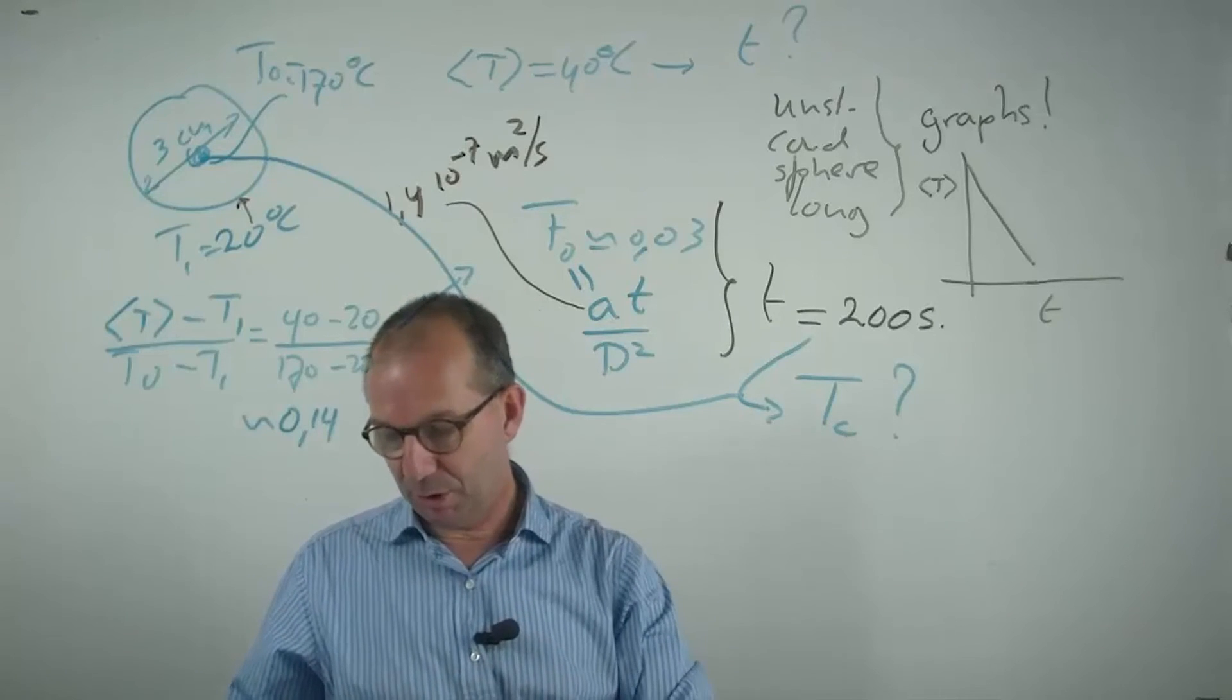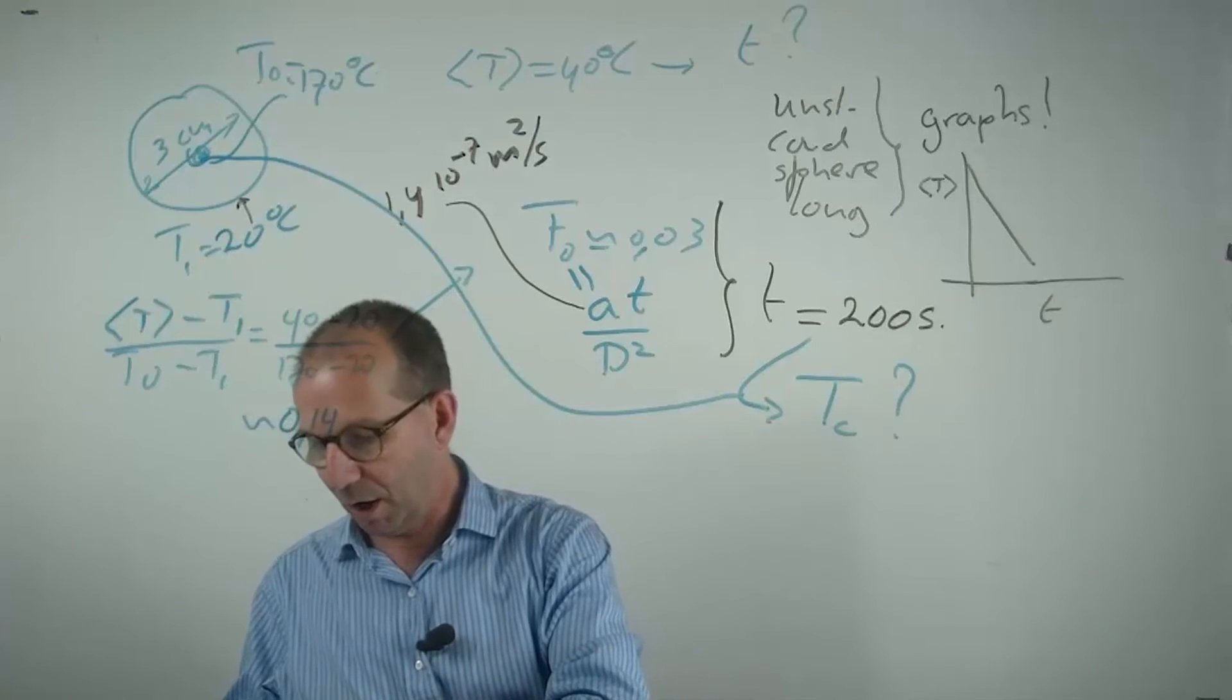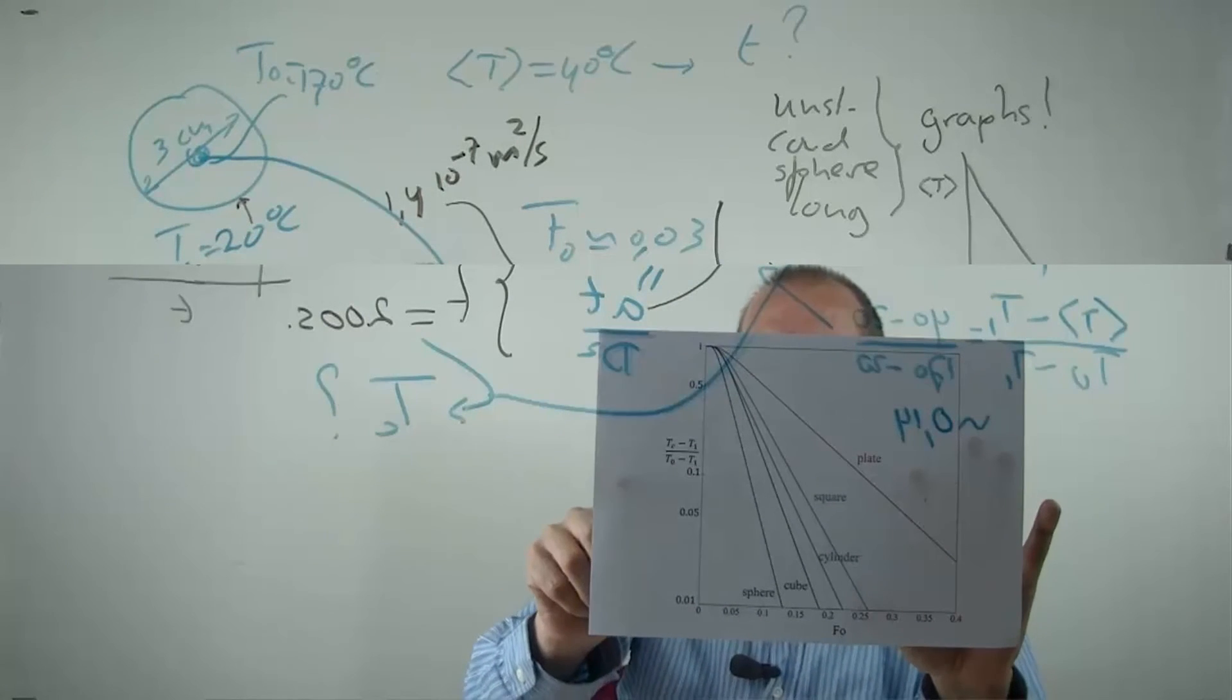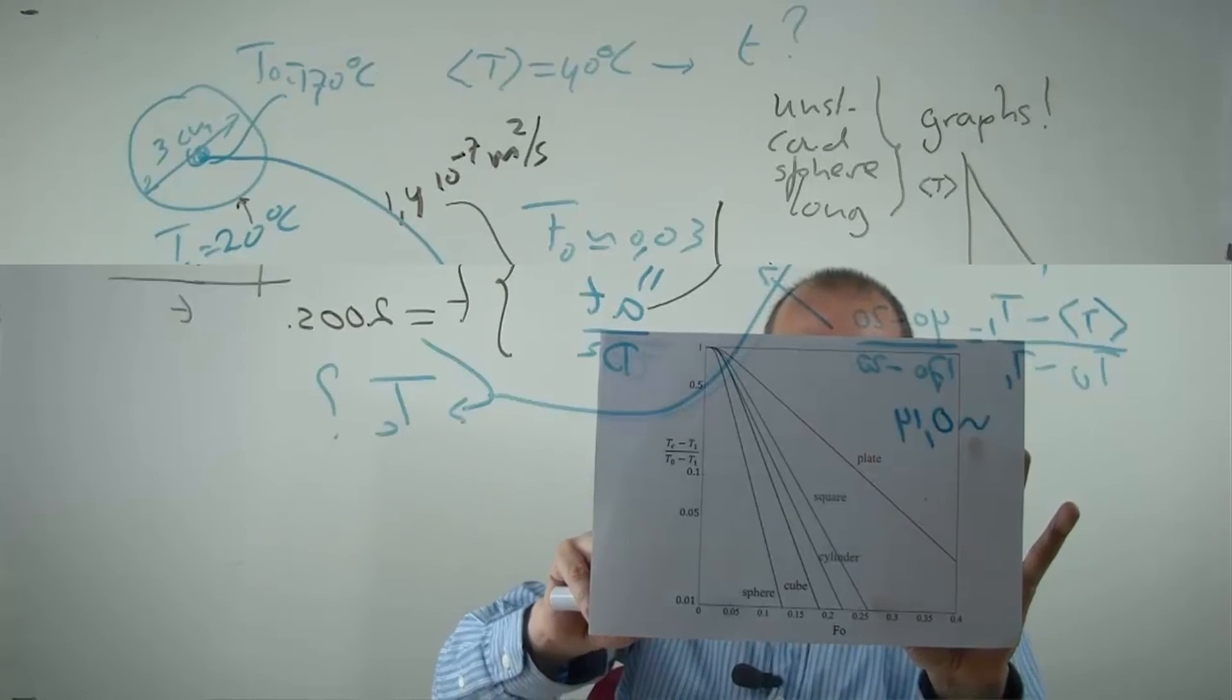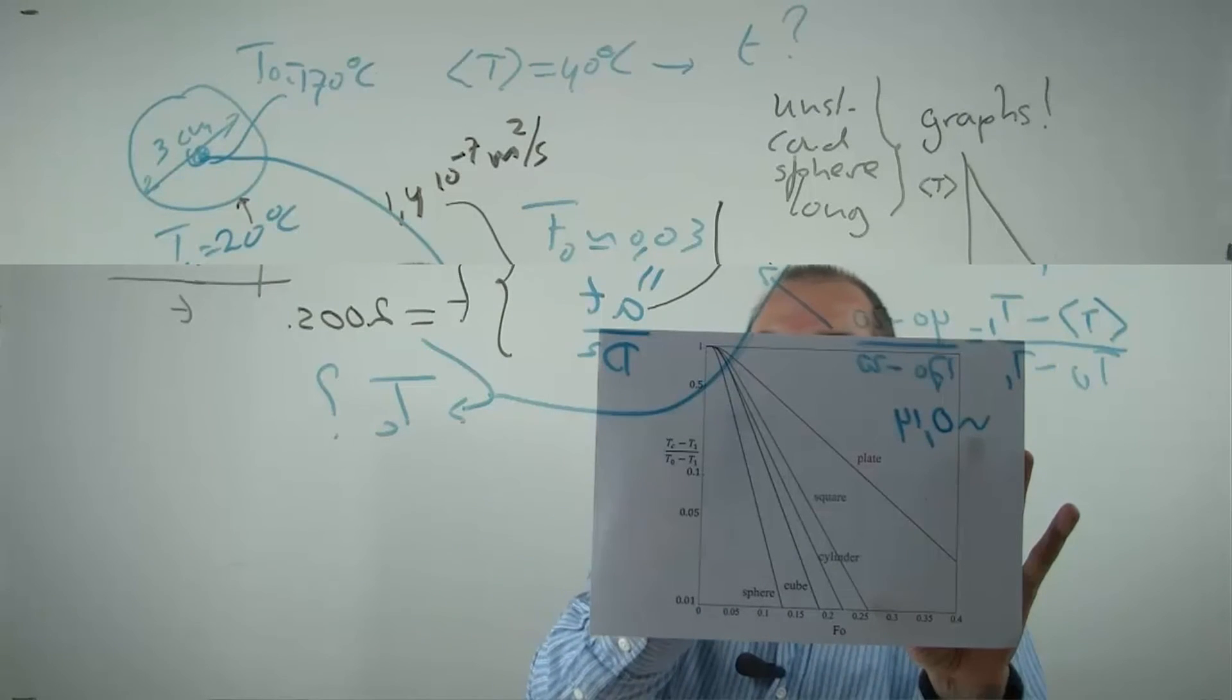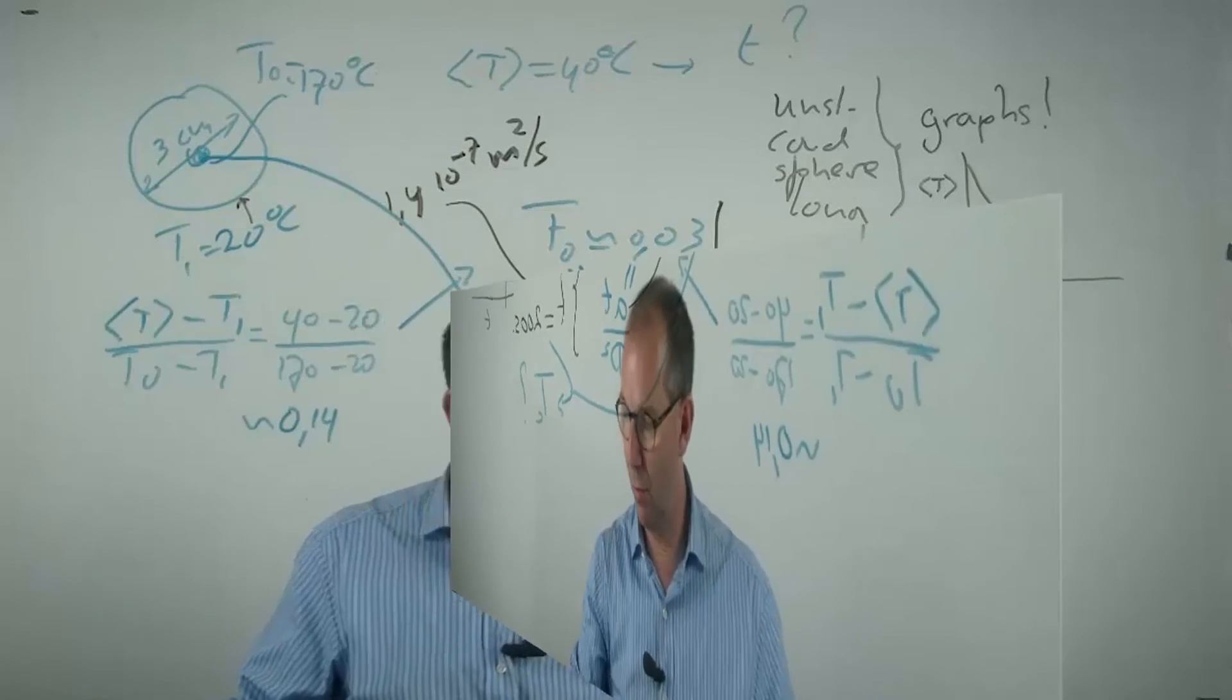Okay, we can find that just by looking at the center temperature. So I pick my other graph, the center temperature. Here it is. And I do the reverse. Now I know that the Fourier number is 0.03. And I read off the line for the center temperature, dimensionless for a sphere.